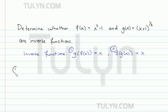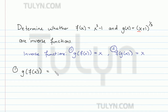Let's do the first one: g(f(x)). Recall that g(f(x)) means g of x when x is replaced with f(x). So g(x) is (x + 1)^(1/3), but wherever we see an x in the function we want to replace it with f(x). So g(f(x)) is going to be (f(x) + 1)^(1/3).